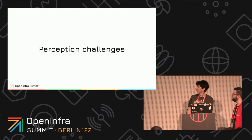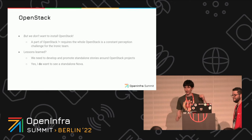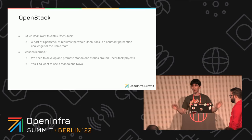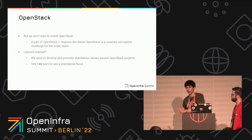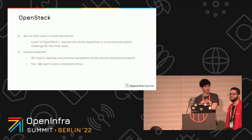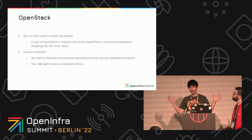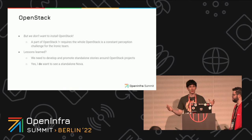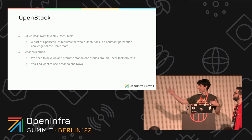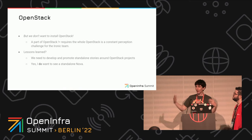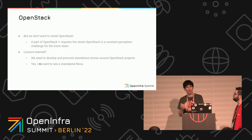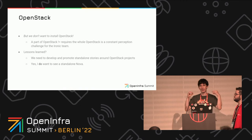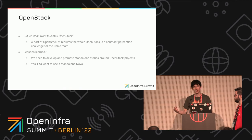To finish up on some perception challenges: the first thing people say is, we do it with Ironic, but we don't want to install OpenStack. There is a lot of misunderstanding that using a part of OpenStack doesn't mean installing the whole OpenStack. We have successfully fought this perception in the Metal3 world. I would love it to be a wider understanding in the OpenStack community, OpenInfra community, and Kubernetes community. Yes, I would love to see a standalone Nova — it may sound crazy, but it's just a convenient API to run virtual machines. My biggest lesson is that OpenInfra should concentrate more on making small bits reusable rather than one monolithic product. Reusable small bits is what I would love to see, and I think Ironic is a good example of that.